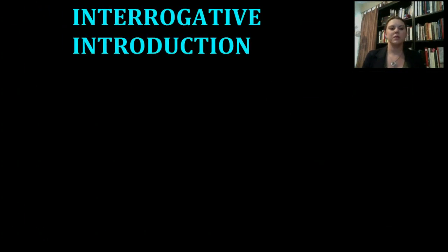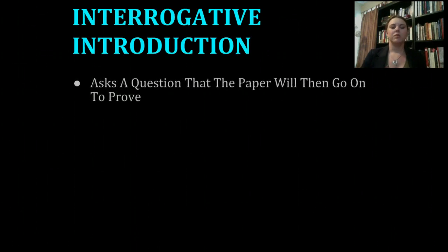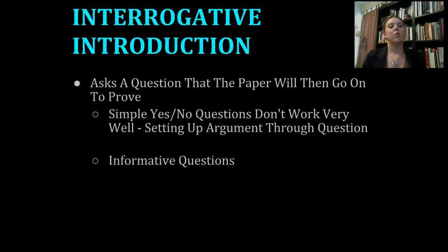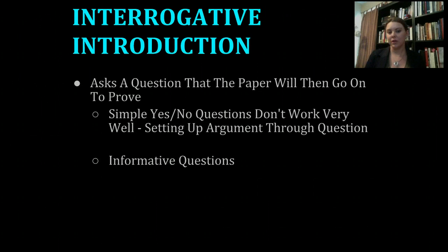The next one is the interrogative introduction. This basically means to ask a question, and it's a question that the paper will then go on to prove. There are really two types of questions: yes-and-no questions, and informative questions. The simple yes-and-no questions don't work very well for this setup because what you're doing by asking a question is you're going to expect that throughout your paper you're going to prove it in an argument — if it's a simple yes-or-no question, it may not be arguable. Informative questions are going to beg a further in-depth answer. The informative questions also work to get the audience's attention and set your paper up to show how your insights or arguments shed light on that answer.